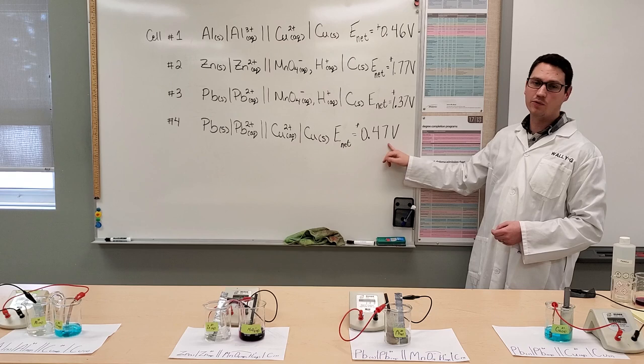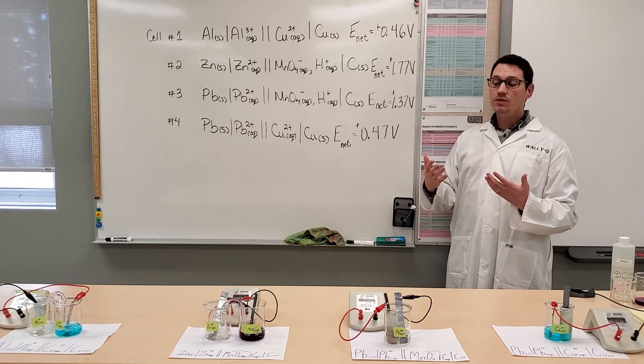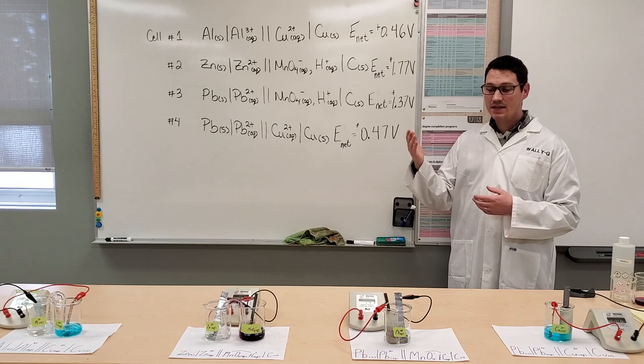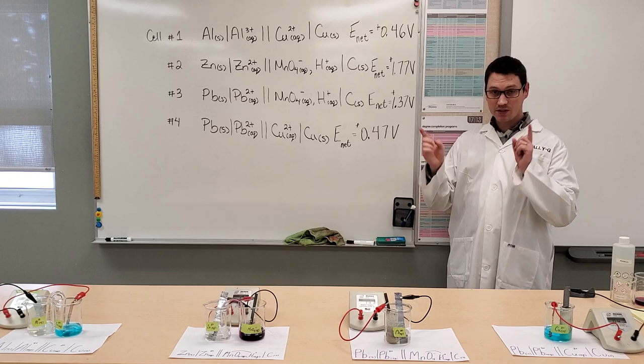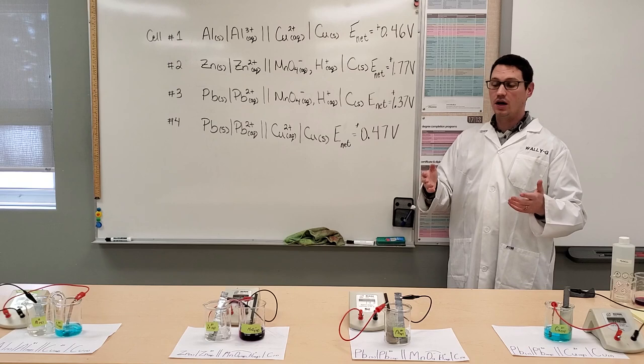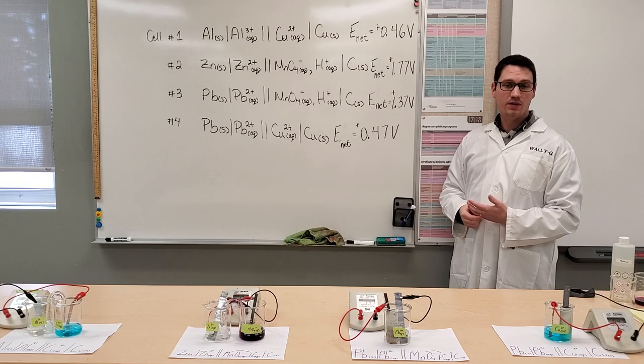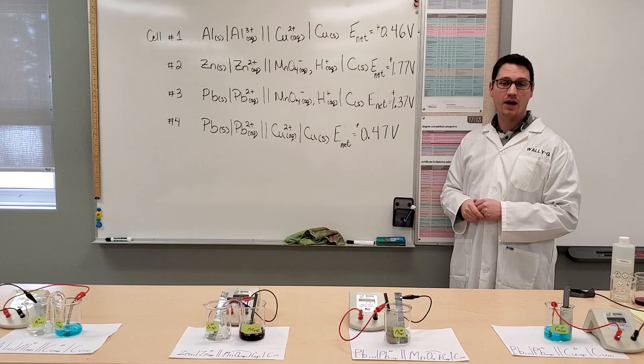So now that you've seen four different cells, what we want you to do is draw two of these cells. One of them has to be with a salt bridge. One of them has to be with a porous cup, and one of the two has to have an inert electrode as well. So draw those two separate cells, and make sure you follow the rubric on your lab to make sure that you've answered all the questions and labeled everything appropriately on your diagram. Let us know if you have any questions. Otherwise, have a great day!